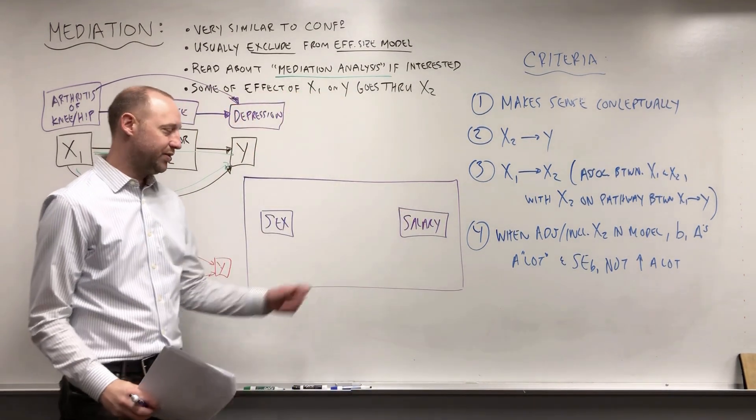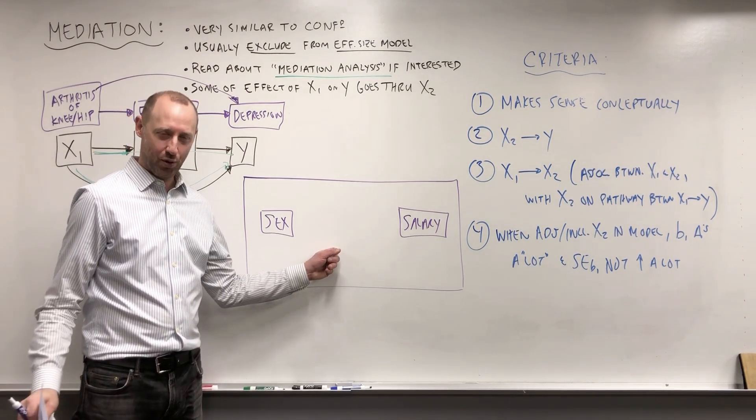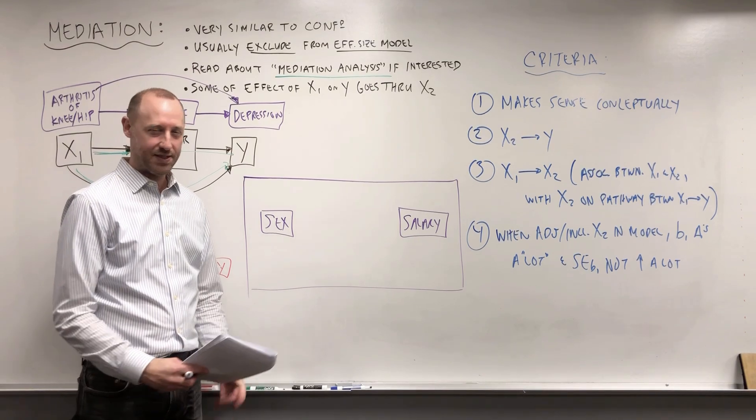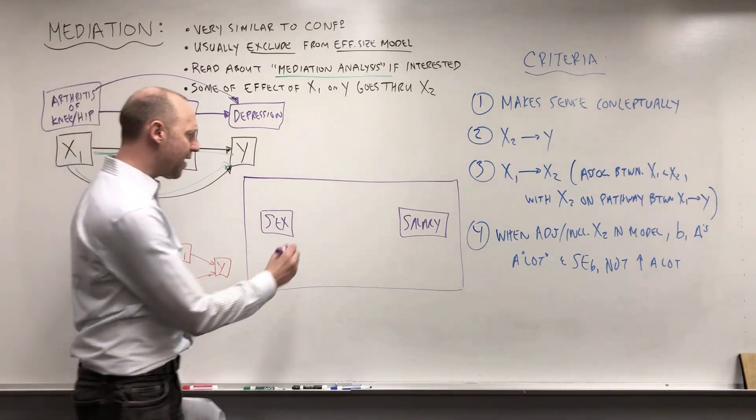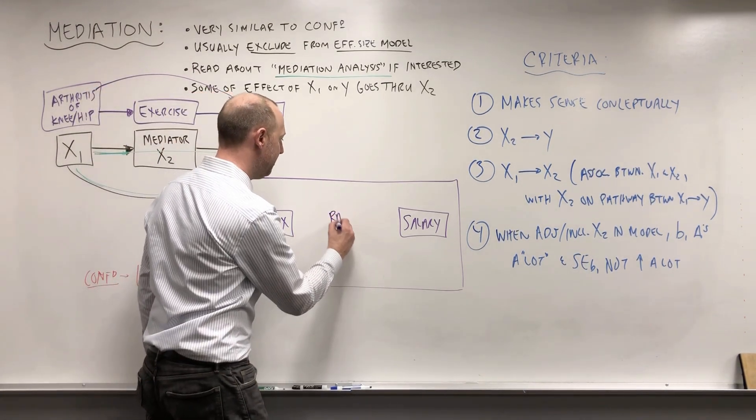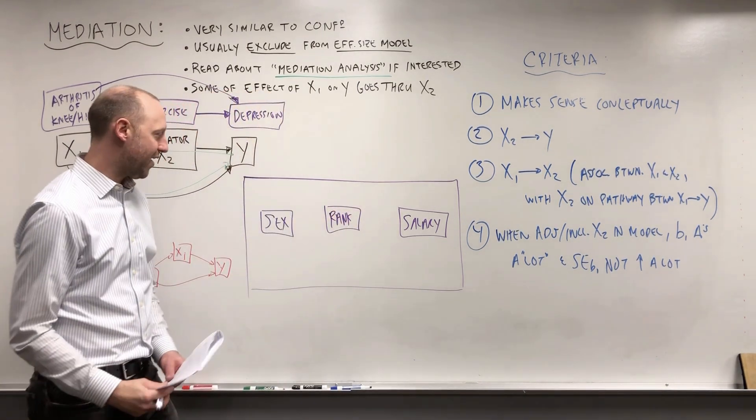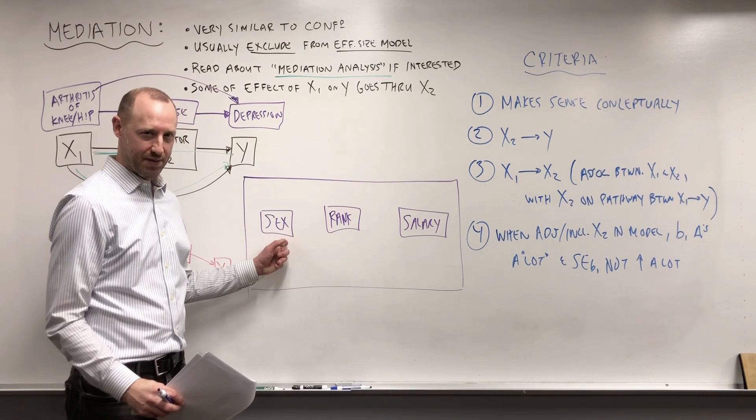But the question of interest is looking at salary discrimination. It's looking at the effect of biological sex on salary. Now in the assignment, there's a note that there was a court case that decided one of these variables needed to be removed from the analysis. And what that was, was the academic rank.